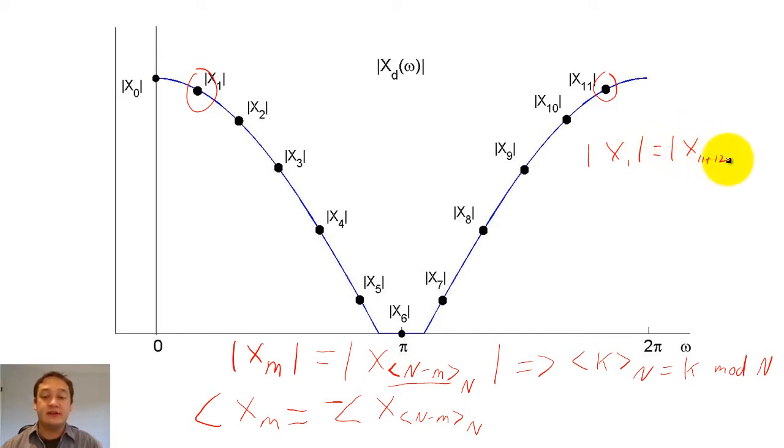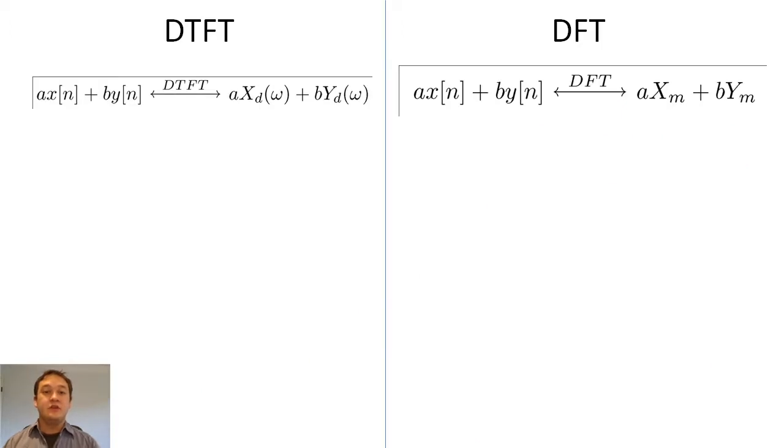And x sub 1 will also equal every N samples after that. In other words, x sub 11 plus 12, or x sub 23, and x sub 11 plus 24, which is equal to x sub 35. You do not need to understand the following equations right now, but keep them in mind.